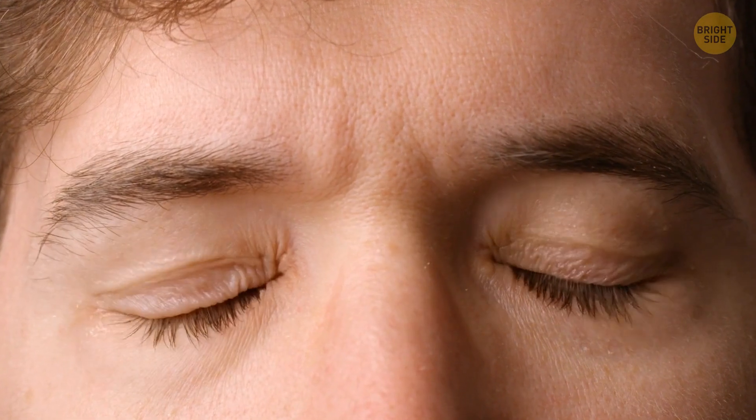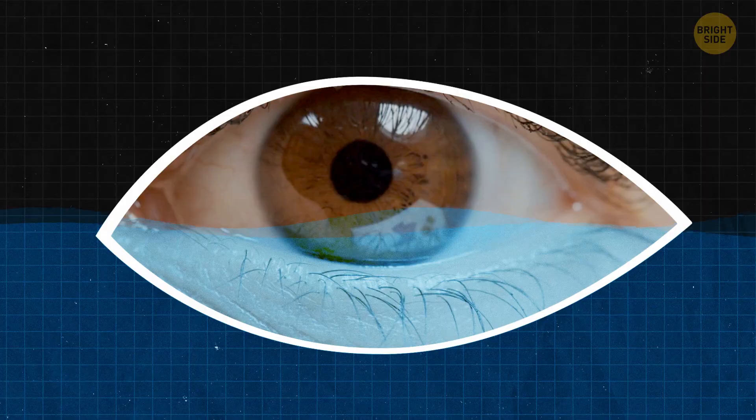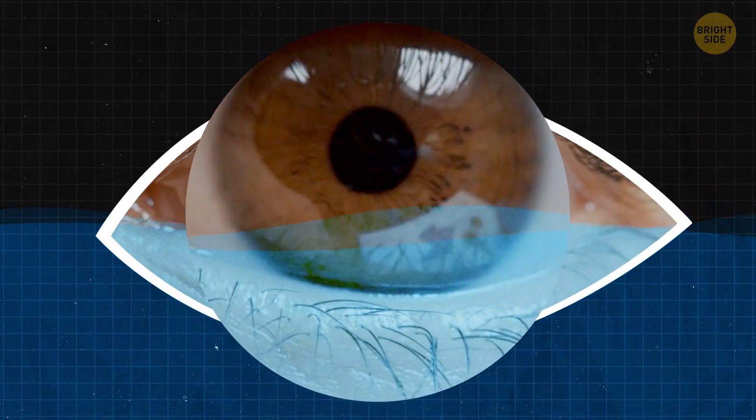That's mostly why we produce tears, by the way. And with the help of our eyelids, this creates a little cover for the whole eyeball, preventing it from feeling itchy.